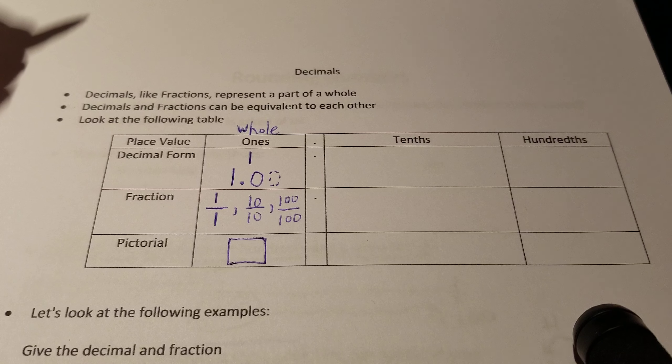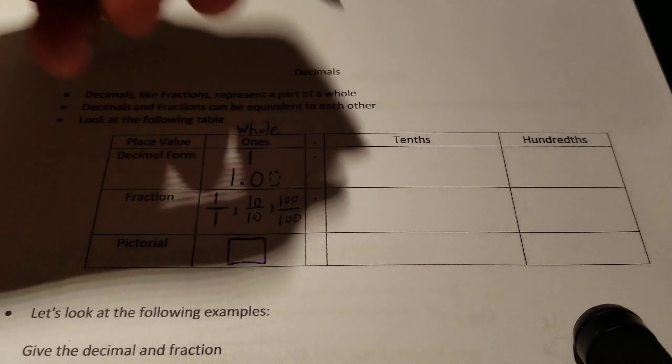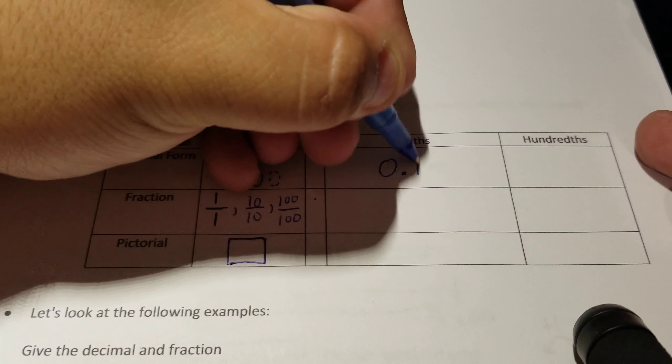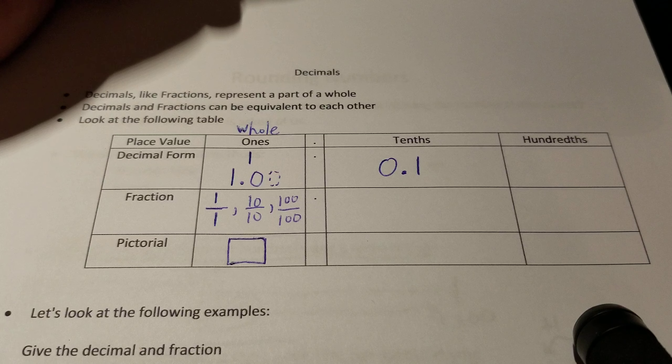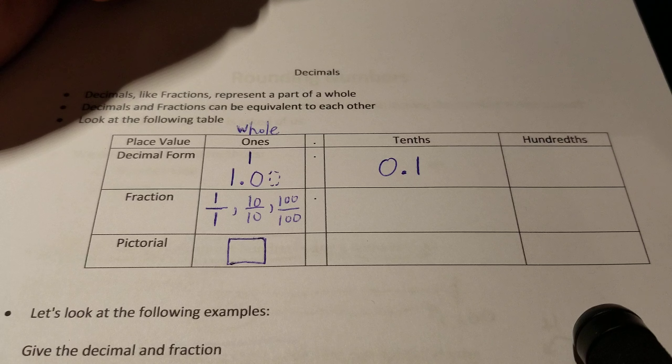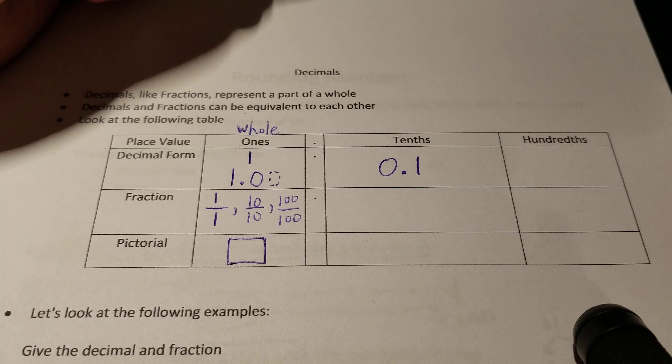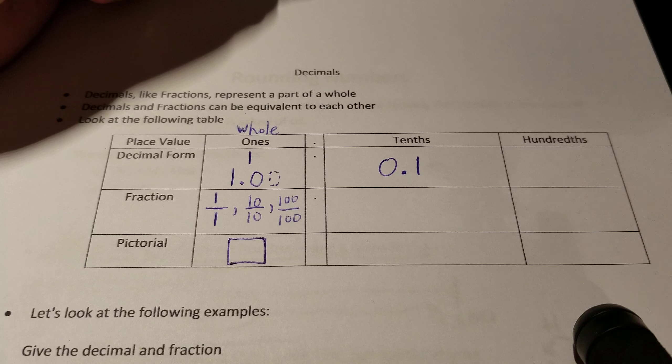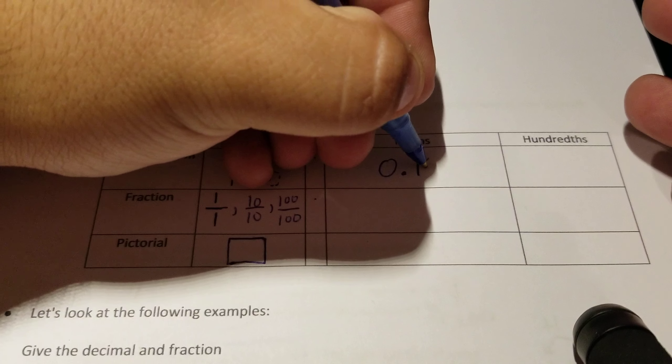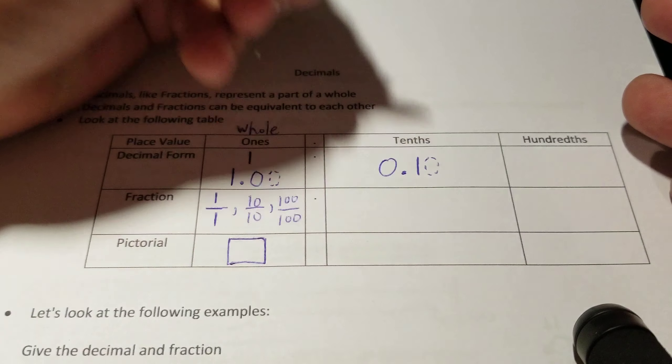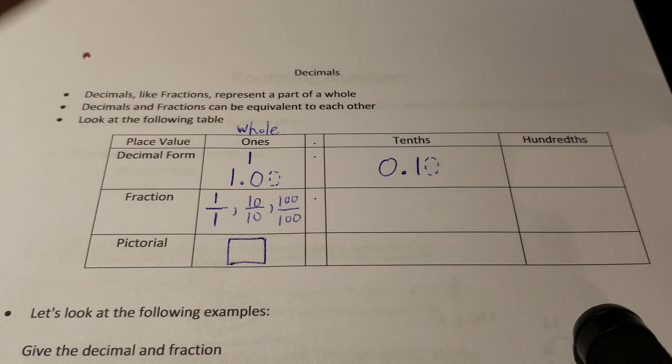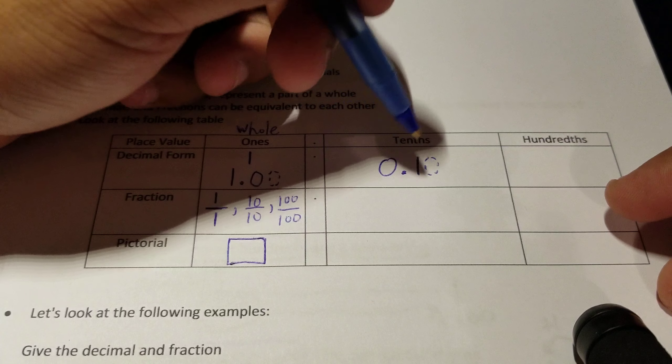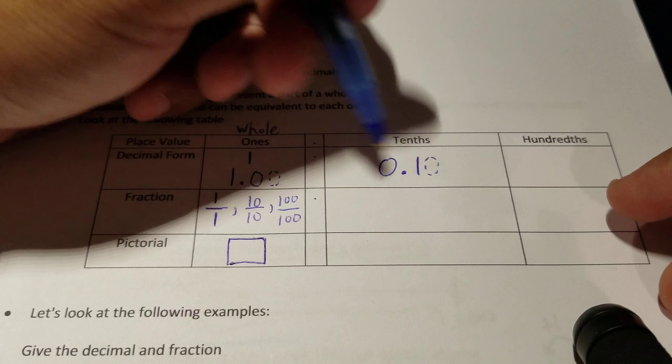When it comes to the tenths, you write it as zero decimal one. You can also think of it as money. Think of tenths as dimes. And ask yourself, what is the value of a dime? It happens to be ten cents. So that's where we get the equivalent of ten hundredths. Ten hundredths equals one tenth.